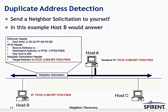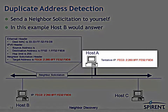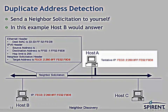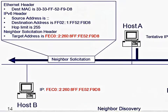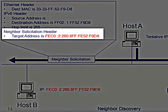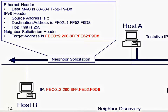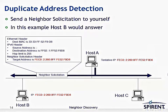Duplicate Address Detection (DAD) is used when a device first boots up and attains its IP information, to determine if that IP address is already in use by another host. With DAD, the node sends a multicast Neighbor Solicitation based on its own configured IP address — converting its unicast IP address to the SNM address, mapping it to a multicast MAC address, sending it out, and seeing if anybody else responds. If another host is also listening to that destination multicast MAC address and checks the target address in the Neighbor Solicitation header, it responds, indicating that the IP address is already in use.